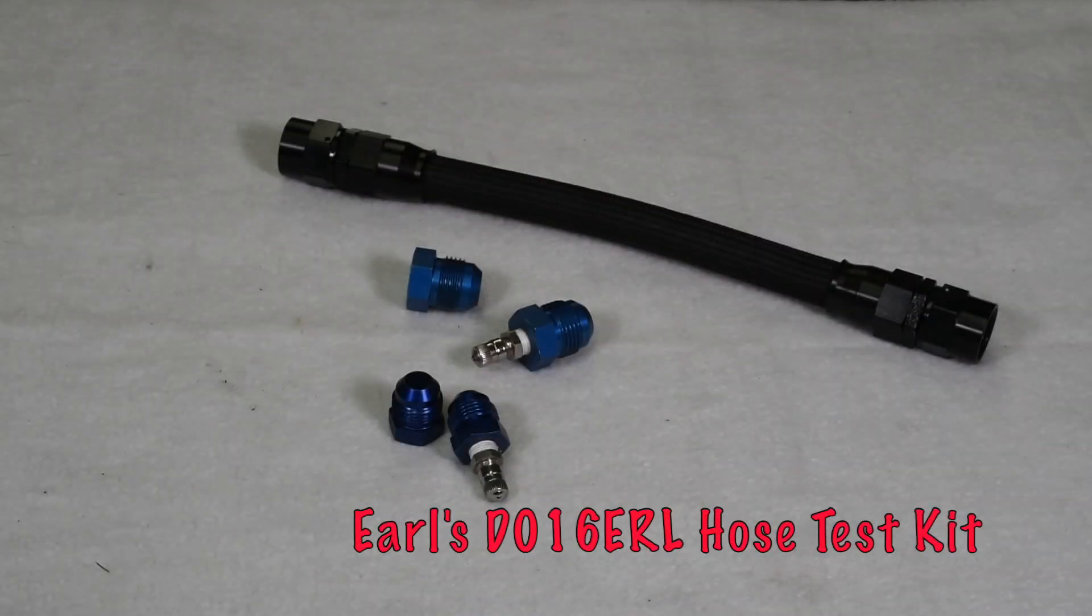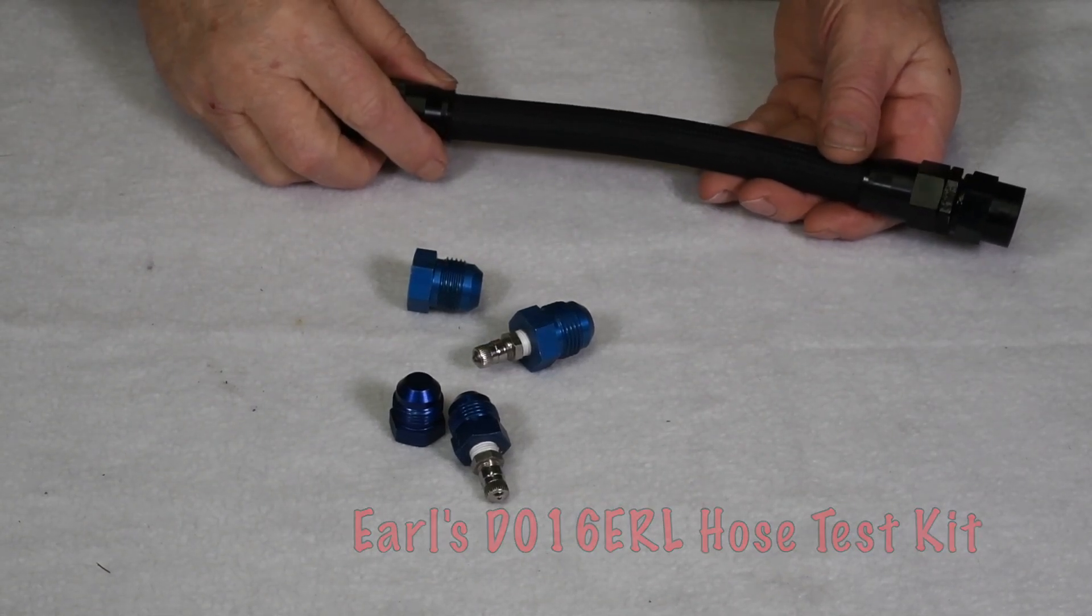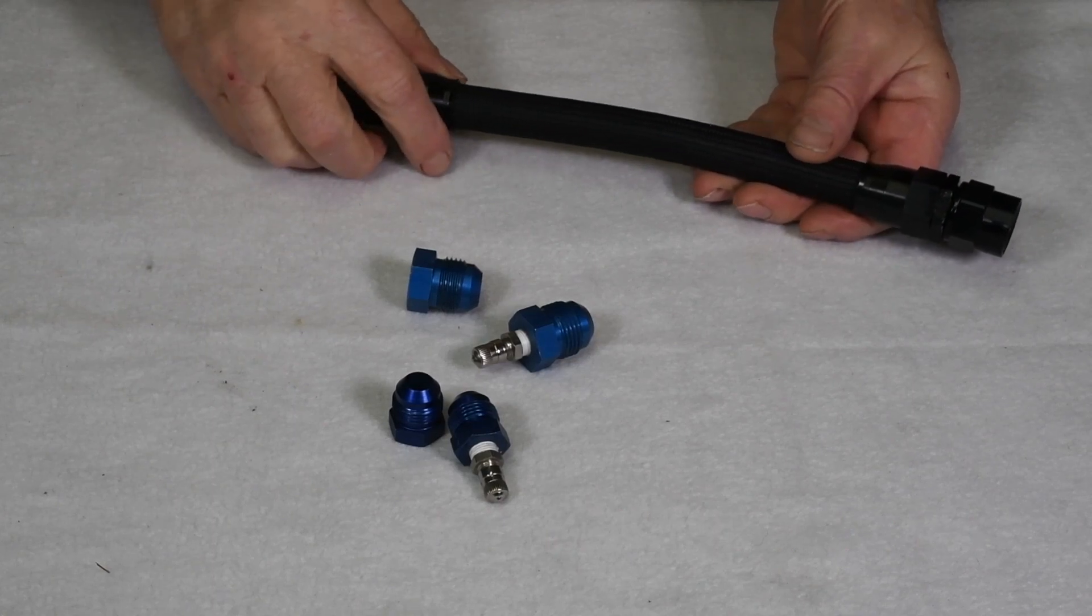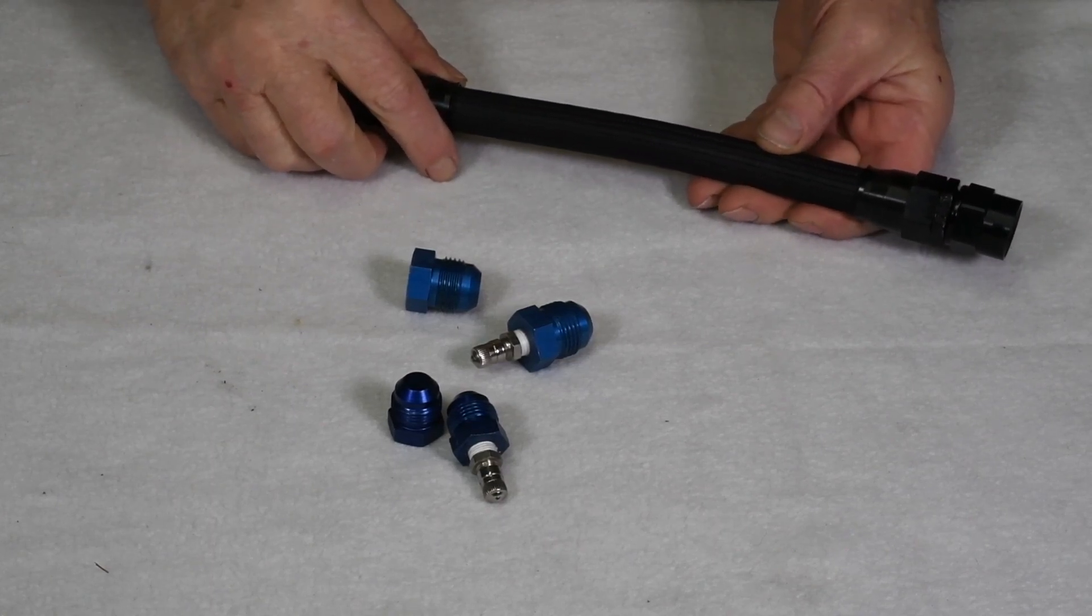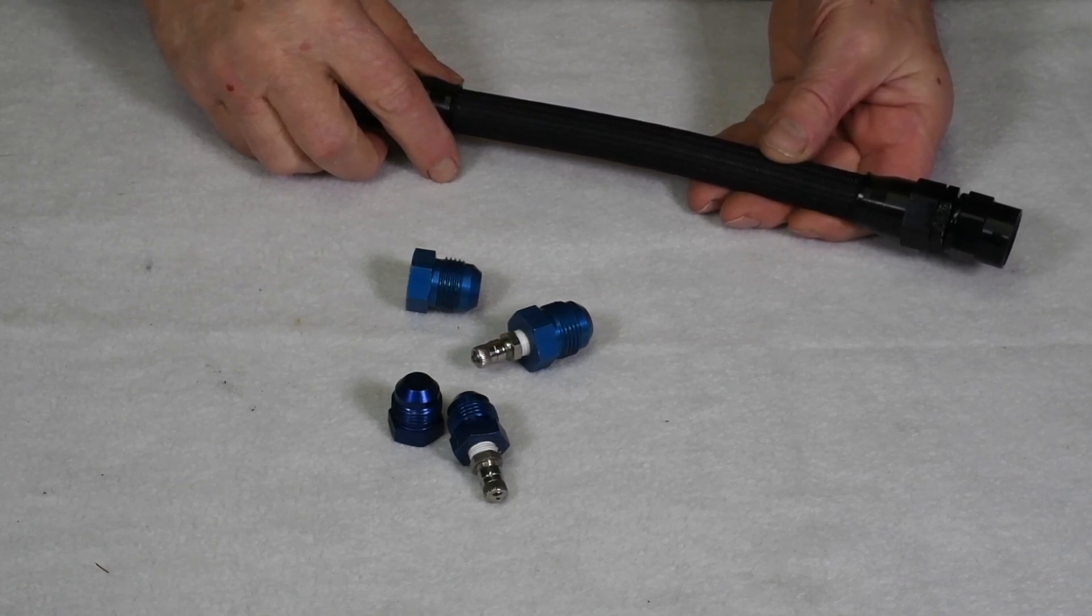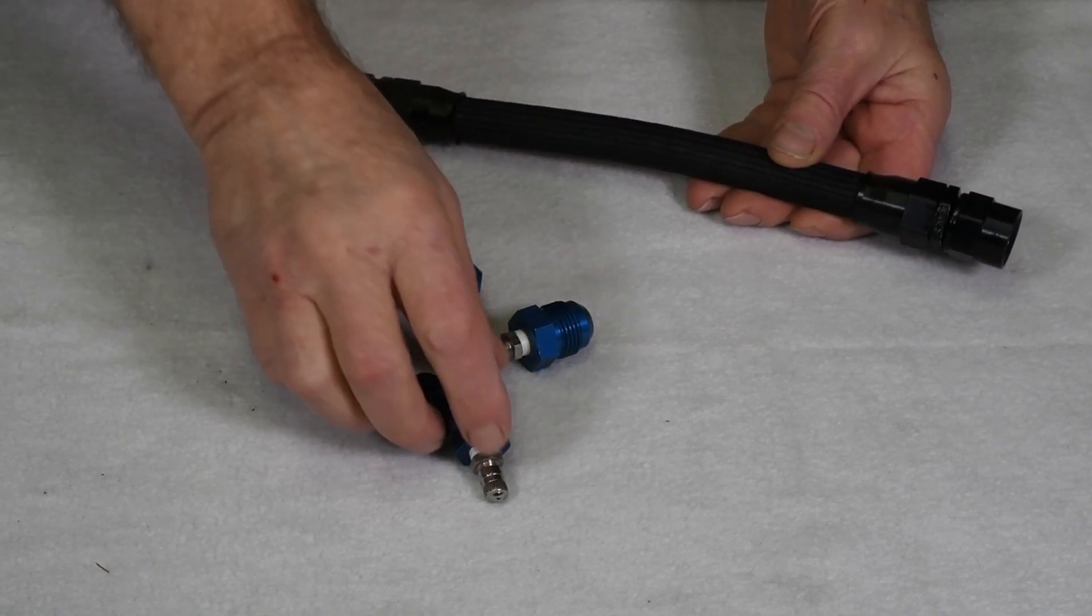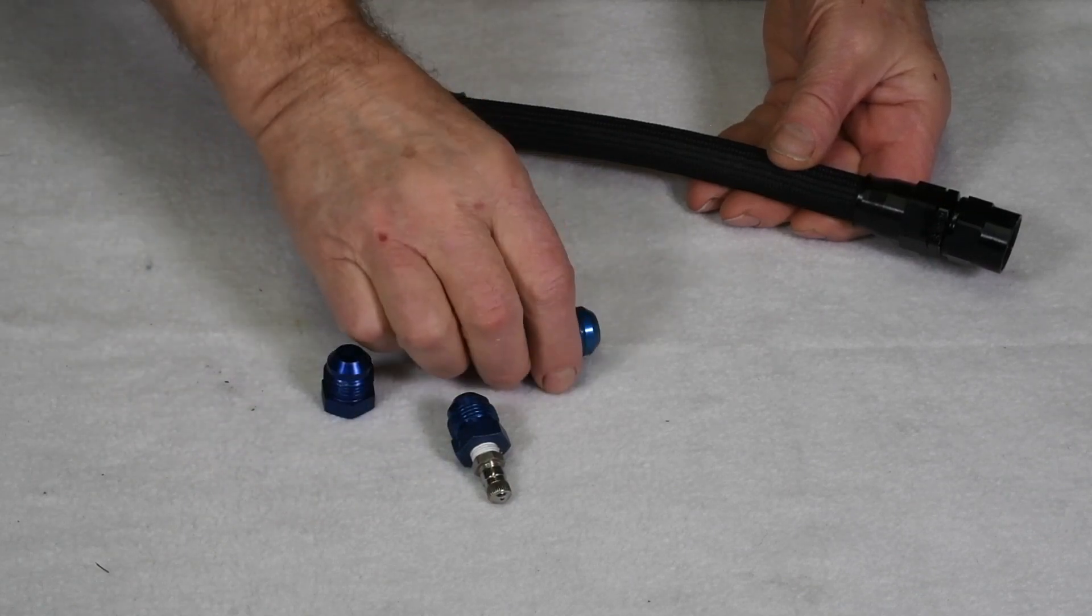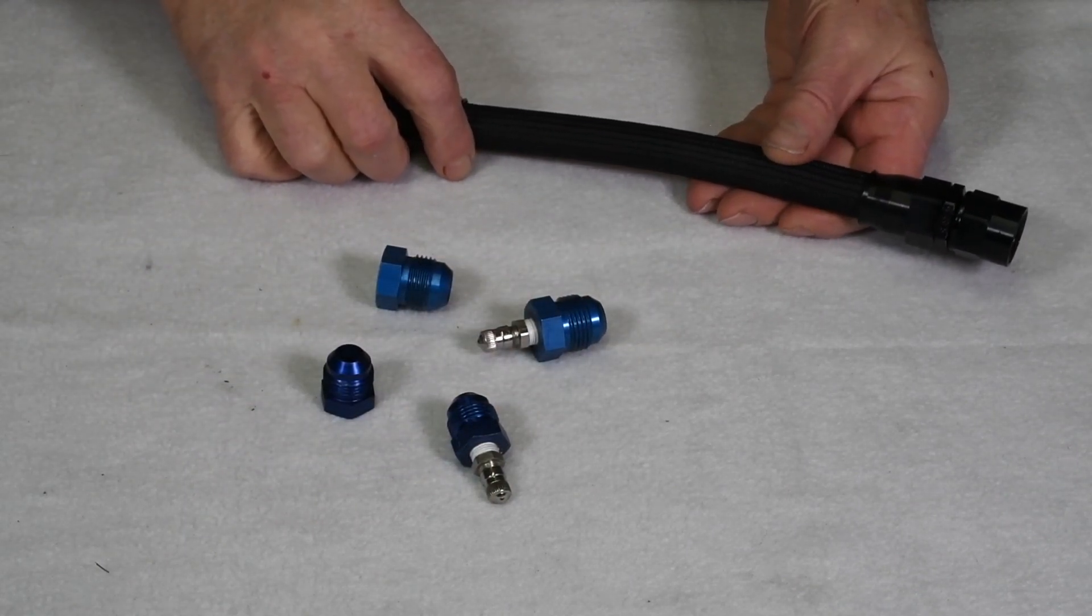I use an Earl's part number D016 ERL test kit. What it consists of is an AN hose end thinning plug in every size of line you'll ever encounter, along with a corresponding plug modified with a common Schrader valve. Basically, the kit allows you to plug one end of the line and introduce compressed air into the other end of the line.